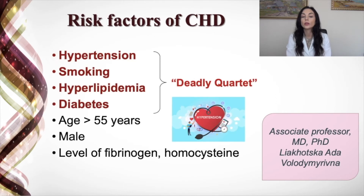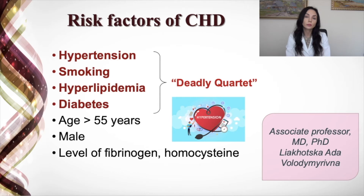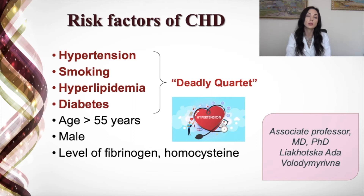Let's look at the risk factors of coronary heart disease. First of all, it is hypertension, smoking, hyperlipidemia, and diabetes mellitus — also called the deadly quartet. Additional risk factors include age above 55 years, male sex, and elevated levels of fibrinogen and homocysteine.